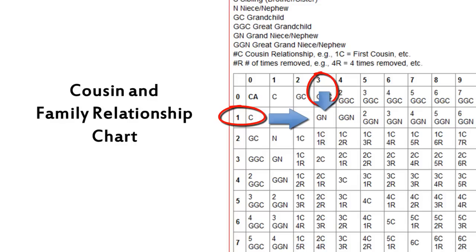Go down column three to the box where the line and the column meet. In this example, the great-grandchild of the common ancestor is the grandniece or grandnephew of the common ancestor's child.